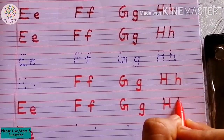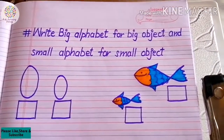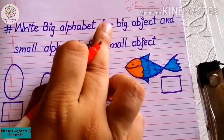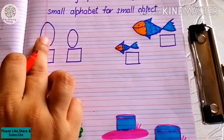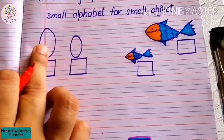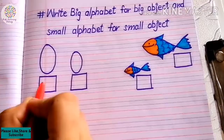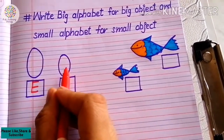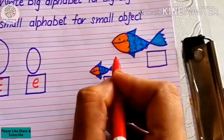Now students, we will do this worksheet. In this worksheet we will write the big alphabet for the big object and the small alphabet for the small object. You can see here — these are eggs. This is a big egg. For the big egg we will write Mama E, capital E, and for the small egg we will write small e, baby e.